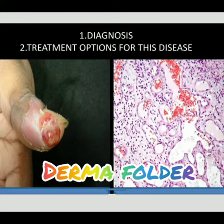The lesion appears translucent with overlying oozing and some whitish areas also present over it. It is soft in consistency, painful, about 4 x 2 cm in size. The surrounding skin is swollen and erythematous with exfoliation of the skin.